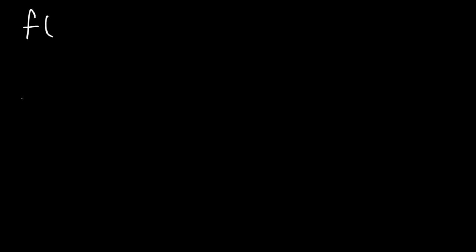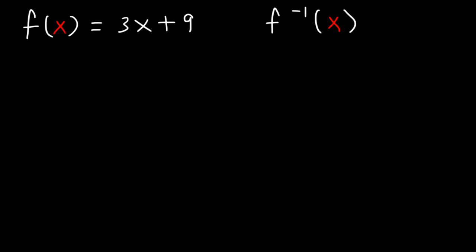Consider the function f of x, which is equal to 3x plus 9. What is the inverse function given f of x? How can we find it? In order to find the inverse function, the first thing you want to do is replace f of x with y. So y is equal to 3x plus 9.